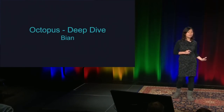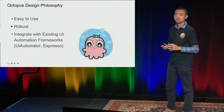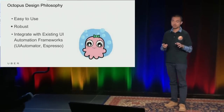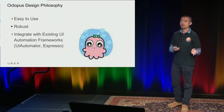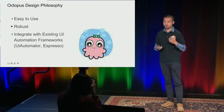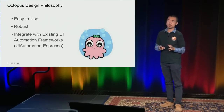Now I'm going to hand it over to Bien, who's going to deep dive into the design of Octopus. Thank you, Apoel. My name is Bien, from the mobile testing infrastructure team at Uber. Before joining Uber, I was working at Facebook on the performance testing framework for mobile applications. Today let's talk about some technical details. We want Octopus to be easy to use — all the demos you see today are triggered by a single Octopus command line, unified and simplified across different platforms including Android, iOS, simulator, emulator, and real devices. We integrate with existing testing frameworks such as UI Automator, Espresso, or iOS UI Automation, so developers can use platform-specific functionalities directly.